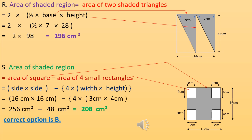For option S, there is a square with side 16 cm. Inside the square are 4 small rectangles with height 4 cm and width 3 cm. Area of shaded region equals area of square minus area of 4 small rectangles. Area of square is 16 into 16 equals 256 cm square. Area of 4 rectangles is 4 into 3 into 4 equals 48 cm square. So 256 minus 48 equals 208 cm square. Option S matches with option 3 in column 2.